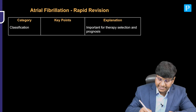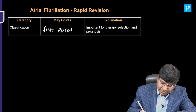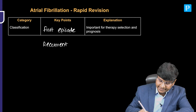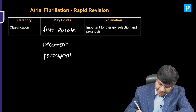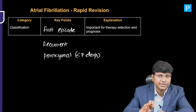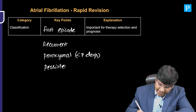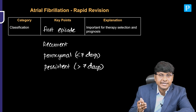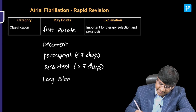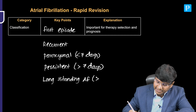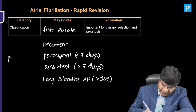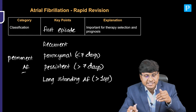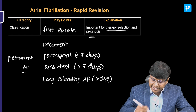The classification of AF includes: first episode, where the individual is having AF for the first time; recurrent AF, where multiple episodes are present; paroxysmal AF, where duration is less than 7 days and it is self-terminating without intervention; persistent AF, where AF is present for more than 7 days and requires intervention for reversal; long-standing AF, where AF is present for more than one year; and permanent AF. This classification is important for therapy selection and prognosis.